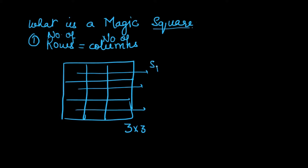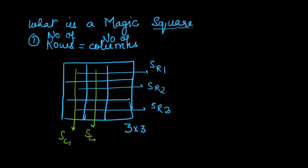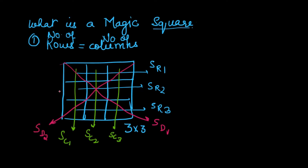The second property is that the sum of all the rows — sum of row 1, sum of row 2, sum of row 3 — and the sum of all the elements in column 1, sum of elements in column 2, sum of elements in column 3, and also the sum of the diagonal elements and the sum of the other diagonal elements — so the second property of a magic square is that all these sums are equal.